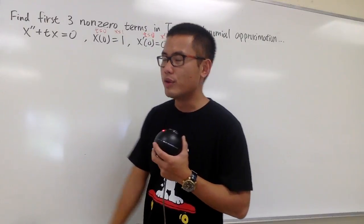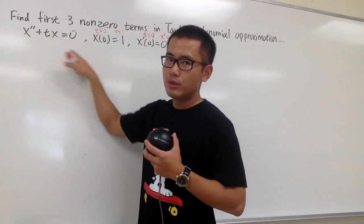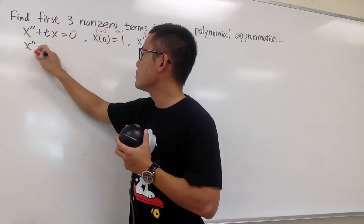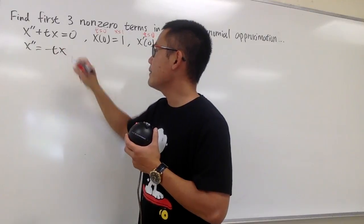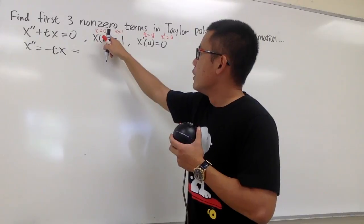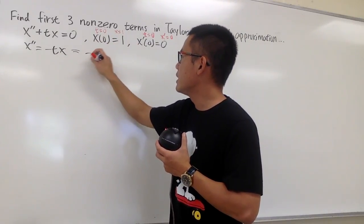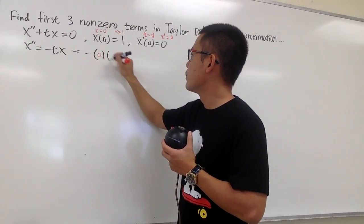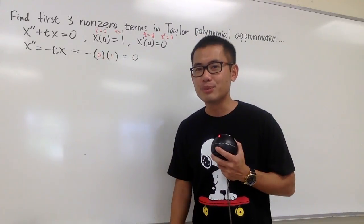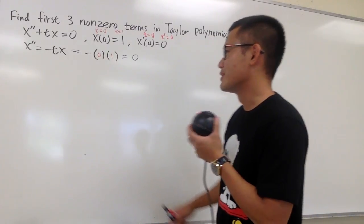This gives us the second derivative. We have x'' plus tx = 0, so let's move this to the other side: x'' equals negative tx. Now we plug in the values: when t = 0 and x = 1, we have negative 0 times 1, which gives us 0 for the second derivative as well. That means we have to go for more derivatives.